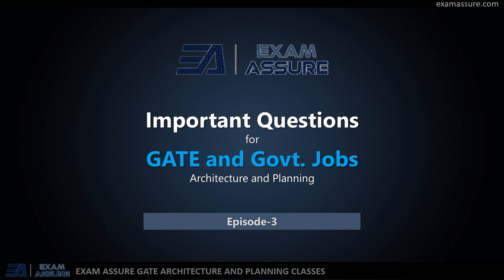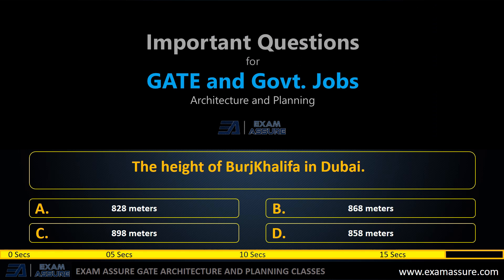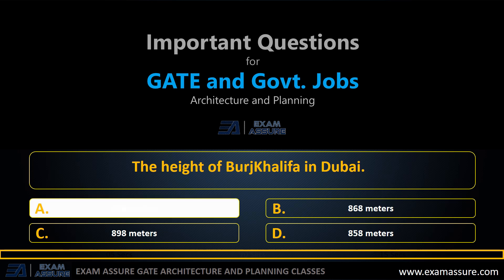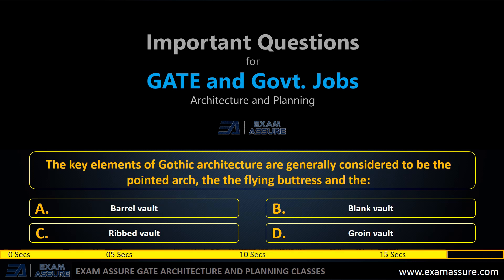Hello everyone, welcome back to Exam SR YouTube channel. This is episode 3 in the series of important questions for GATE and government jobs. Question 1: The height of Burj Khalifa in Dubai is — option A: 828 meters, option B: 868 meters, option C: 898 meters, option D: 858 meters. The correct answer is option A, 828 meters.